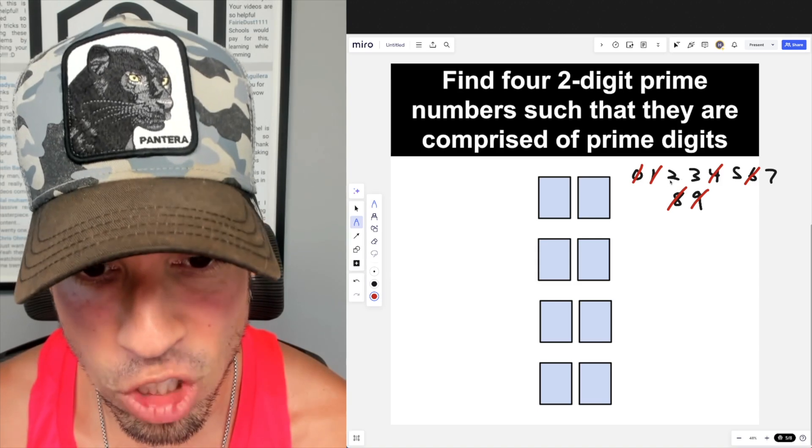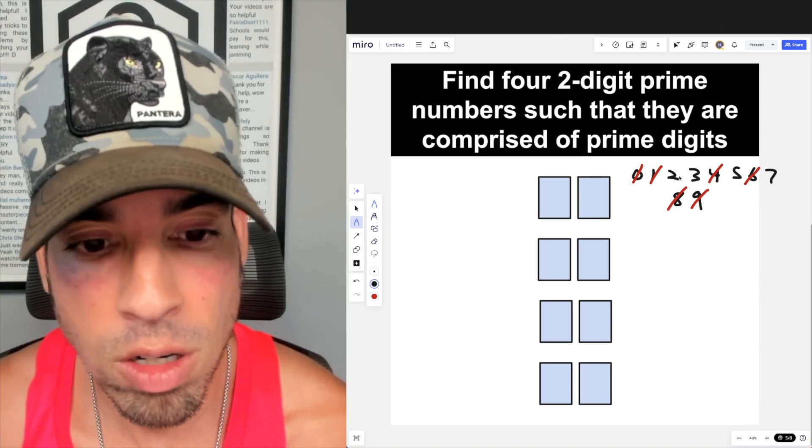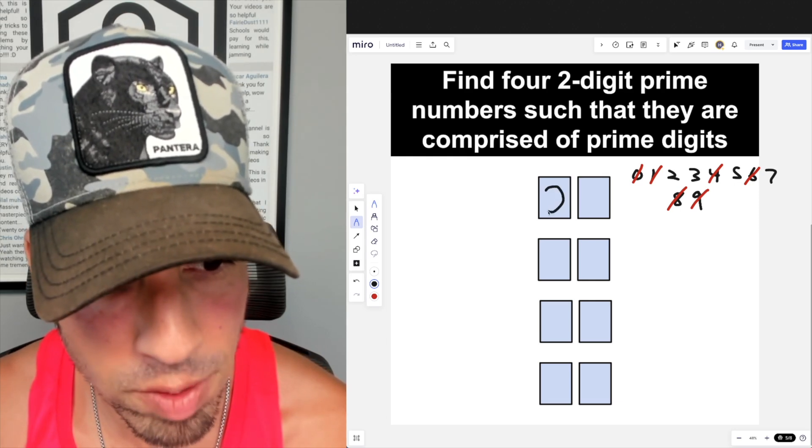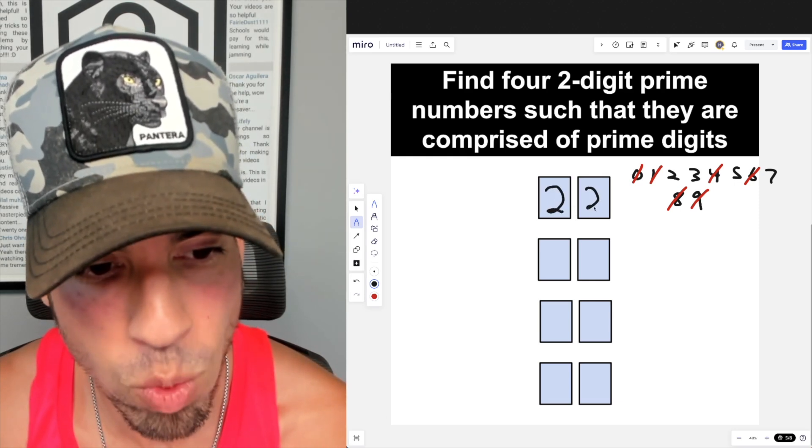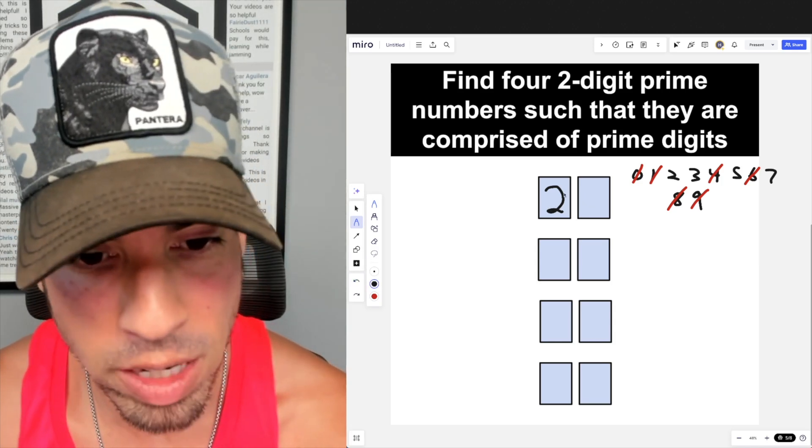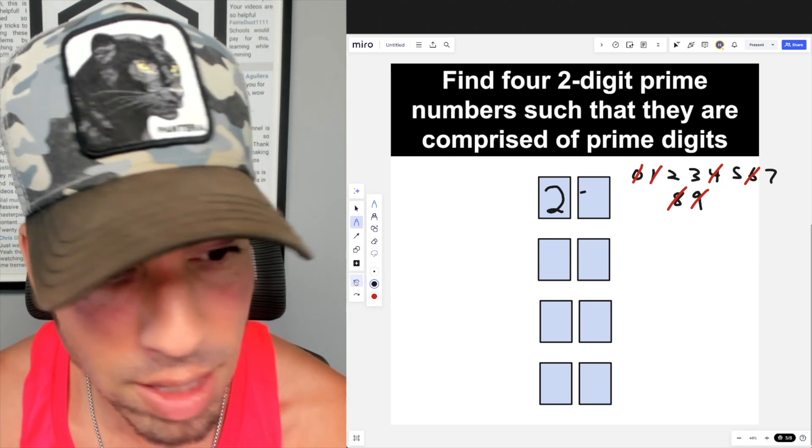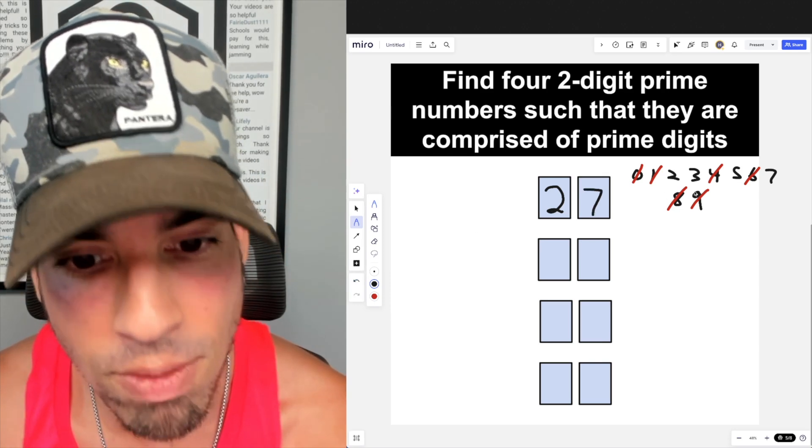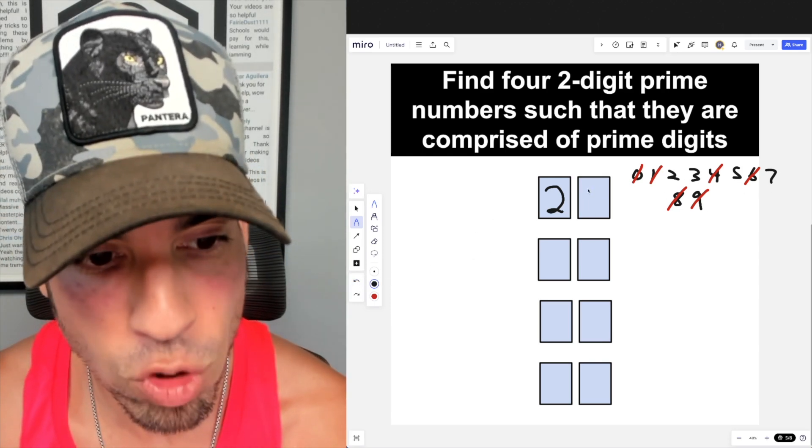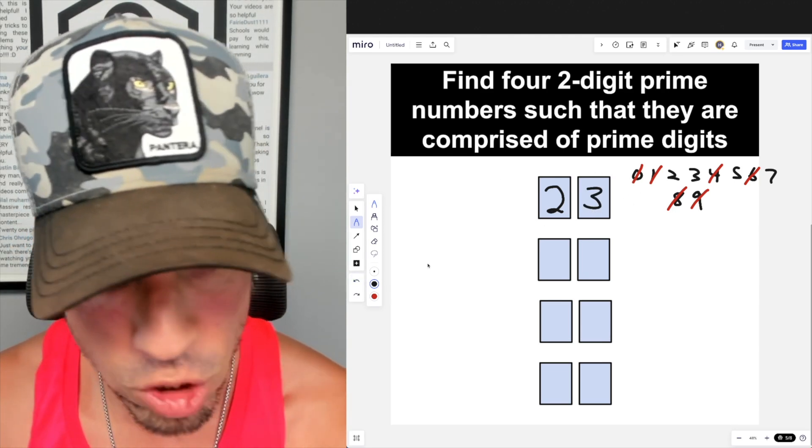We're going to start by starting with a two in the tens spot. So if we have a two, what can we have? Can we have 22? No, we cannot, because 22 is not a prime number—it's divisible by two. Can we have 25? No, we cannot, that's divisible by five. Can we have 27? That's divisible by three and nine. But we can have 23. So we went through every option in the twenties and we got our one winner, which is 23.